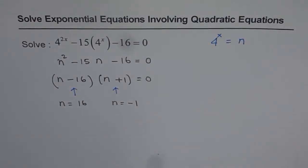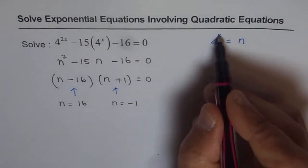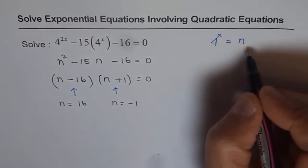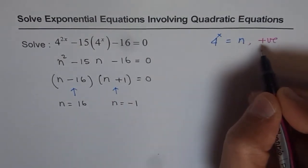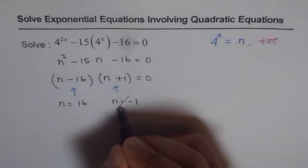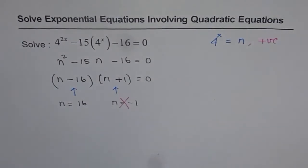As you will notice, we replaced 4^x with n. Remember 4^x will always be positive - it can never be negative. Therefore, n = -1 is not a valid solution for us. However, n = 16 is the right solution.